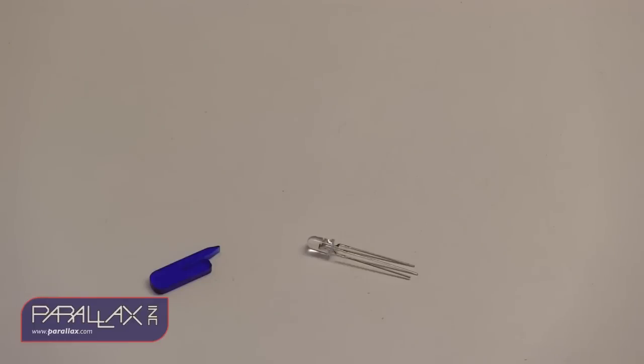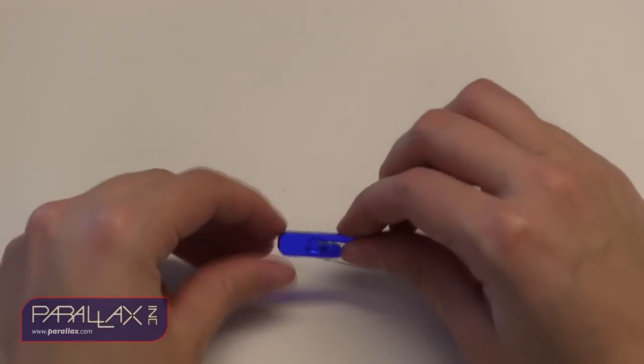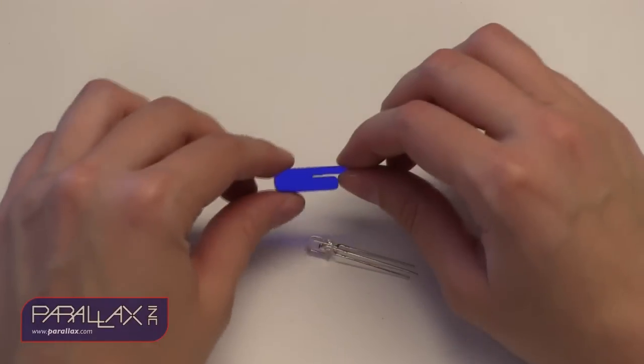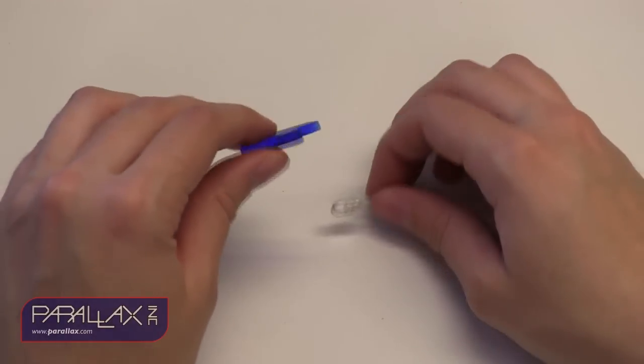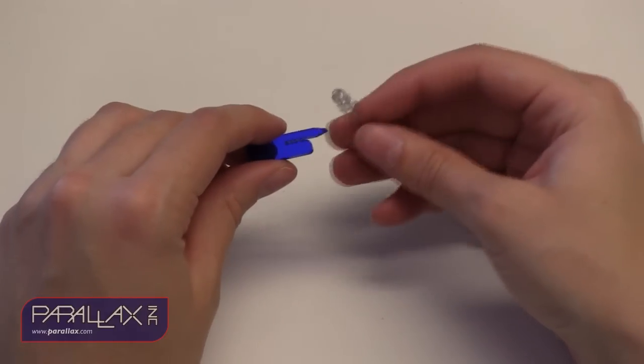Next, we'll solder the LED. But first, we'll need to bend the leads to fit on the S2 PCB. Included in the kit is a bender tool. Insert the LED into the tool with the right angle lead facing outward, like so.